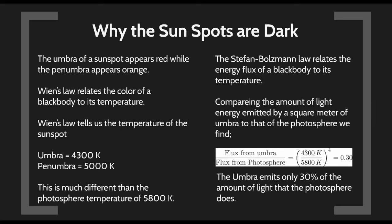They're dark for a couple of reasons. The umbra appears red, while the penumbra appears orange, because of differences in temperature. The umbra is at 4,300 Kelvin, and the penumbra is at 5,000 Kelvin, much different than the photosphere temperature of about 5,800 degrees Kelvin. Using the Stefan-Boltzmann law to relate the energy of this black body to temperature, comparing the two, I see the flux from the penumbra divided by the flux from the photosphere equals 0.3. The umbra is only emitting 30% the amount of light of the rest of the photosphere, which is why they appear dark.